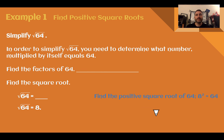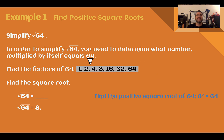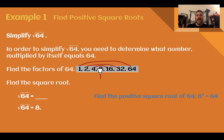Example 1, find positive square roots. Simplify the square root of 64. In order to simplify the square root of 64, we need to figure out what number multiplied by itself is equal to 64. It's helpful to list out the factors: 1, 2, 4, 8, 16, 32, and 64. Factors are numbers that are multiplied together to get your product. 8 is the number multiplied by itself to get 64, so the square root of 64 would be 8, since 8 times 8 is 64. Use whatever way works best for you.